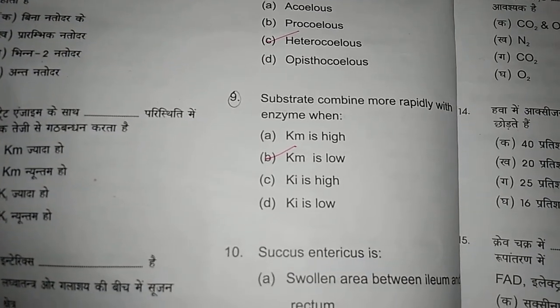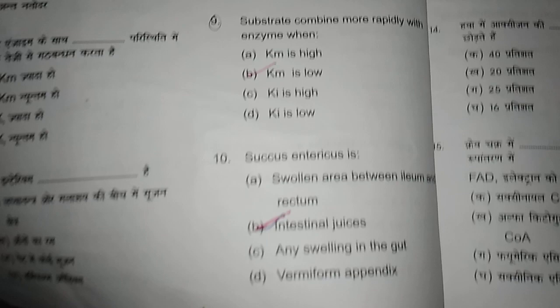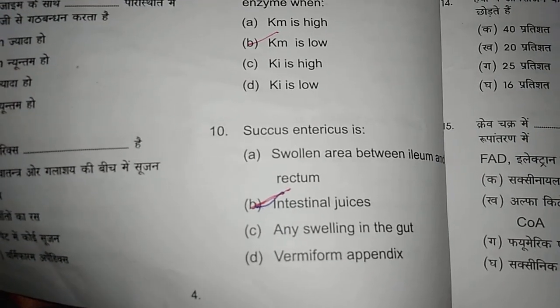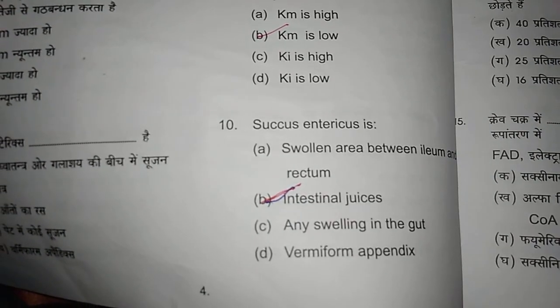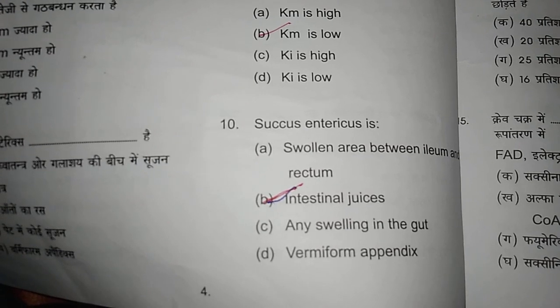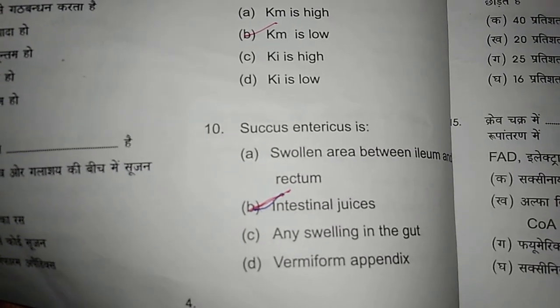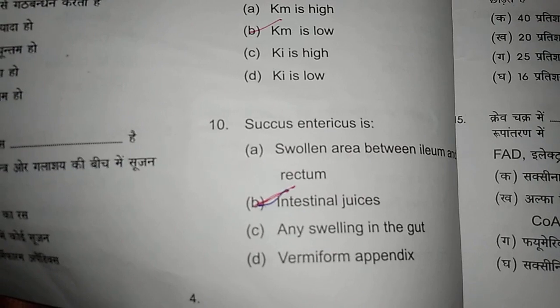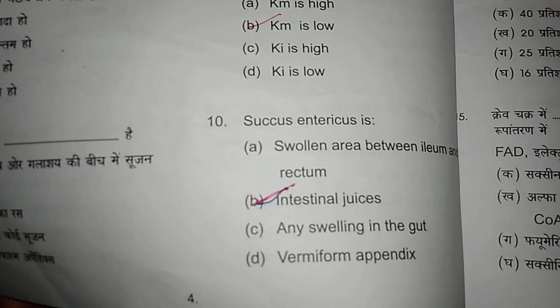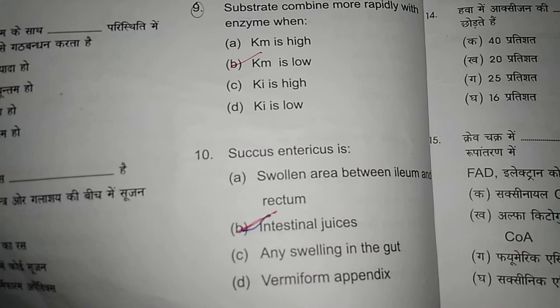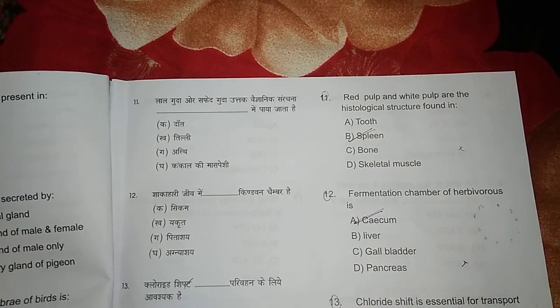Question nine: substrate combines more rapidly with enzyme when the KM is low. Question ten: succus entericus is an intestinal juice gland — it is a gland which secretes intestinal juices and is present in human beings. The right answer is B.